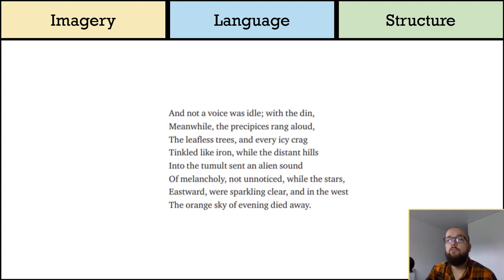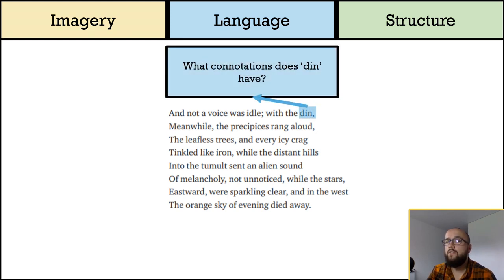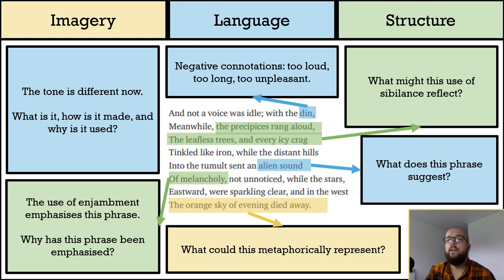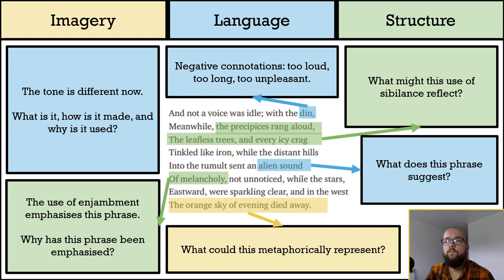Here we have the rest of the poem, which is significant as it sees a change in the persona's feelings towards nature. I've given it six questions to think about, so why not read the questions and lines, make some notes and share your ideas in the comments. 'Din' is a word with negative connotations — too loud, too long, too unpleasant. I see this as the poem's turning point, shifting the tone from positivity to something unsettling.